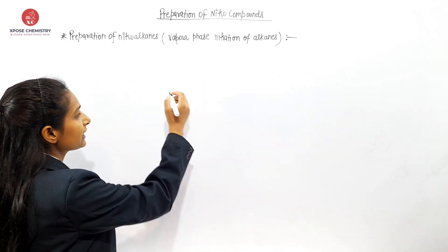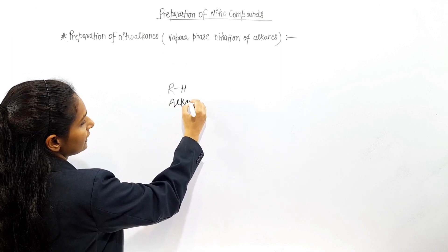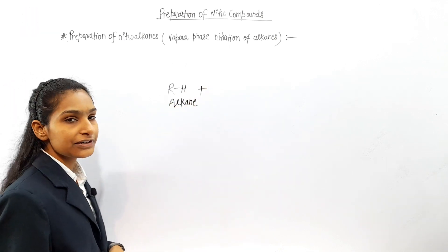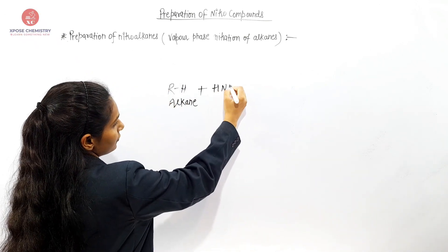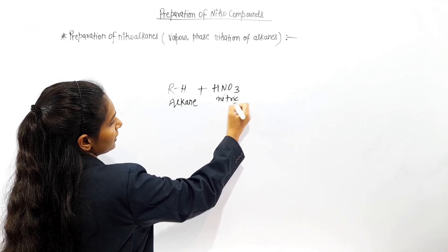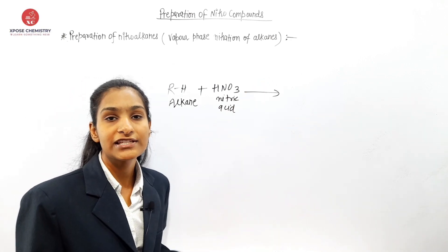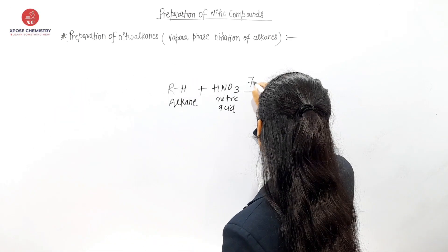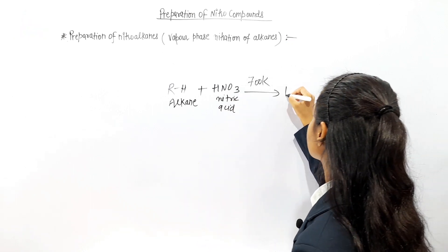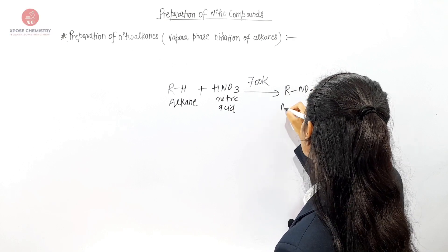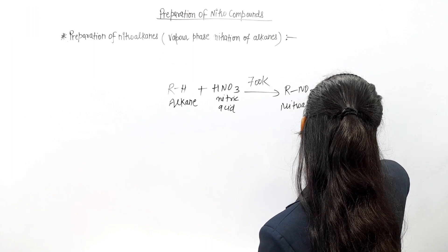Nitration. Alkane reacts with nitric acid (HNO3) at a temperature of about 700 Kelvin. What is the formation? Nitro alkane — RNO2 — plus water.